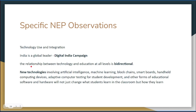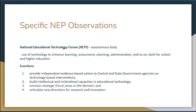Earlier, technology was at the center and teaching-learning was revolving around it — but that cannot be the case now. Technology has to affect teaching and learning, and teaching and learning in turn has to affect technology, so it has to be a bi-directional relationship. New technologies are emerging: in 2020, NEP talks about artificial intelligence, machine learning, blockchains, smart boards, handheld computing devices, adaptive computer testing for students, and other forms of educational software and hardware that will change not just what students learn in the classroom, but how they learn.